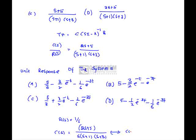If we apply the inverse transform, we will get c of t as 5 by 3 minus 3 by 2 e power minus t minus 1 by 6 e power minus 3t, which is option A is correct.